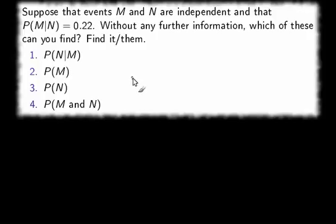Number one, the probability of N given M. Number two, the probability of M. Number three, the probability of N. Or number four, the probability of M and N.